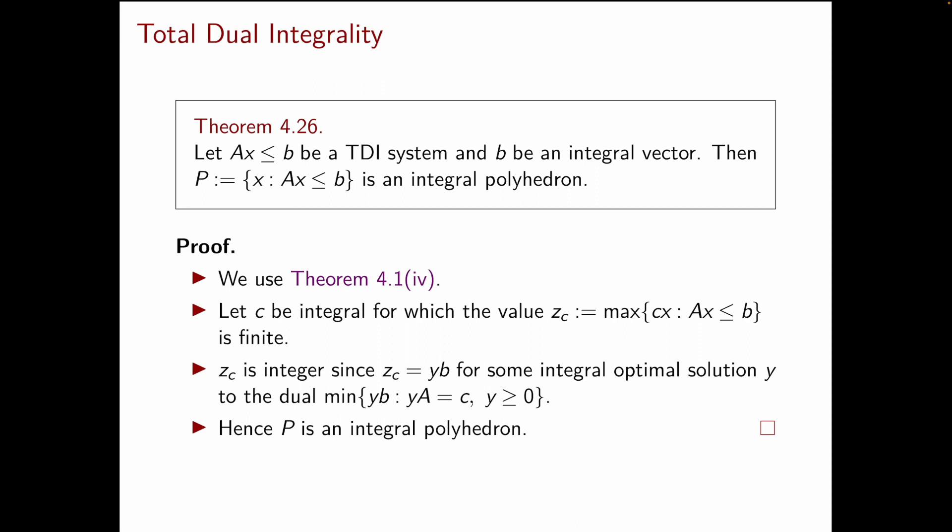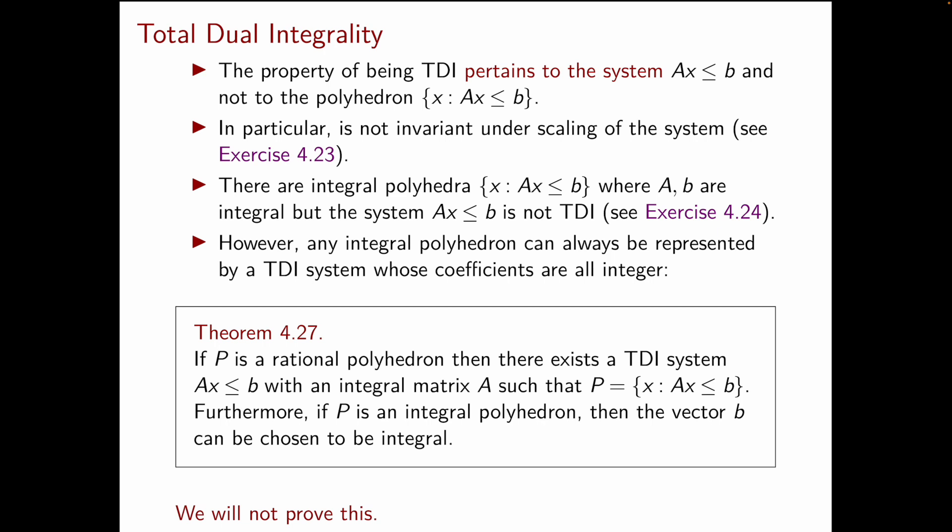Now, theorem 4.26 is in a way the most important theorem about TDI-ness that we are going to discuss for now. But, I still want to tell you some more facts about TDI-ness. So, the first thing that I want to stress once again is that the property of being TDI is a property of a system of linear inequalities and not of a polyhedron. So, don't get confused about this.